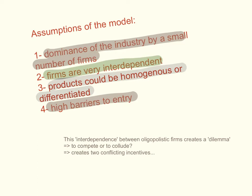The interdependence assumed between oligopolistic firms creates a dilemma for those firms: should they compete against each other, or should they cooperate — or in economics, collude? Oligopolists face two conflicting incentives: an incentive to compete against each other, and at the same time, an incentive to collude or cooperate.